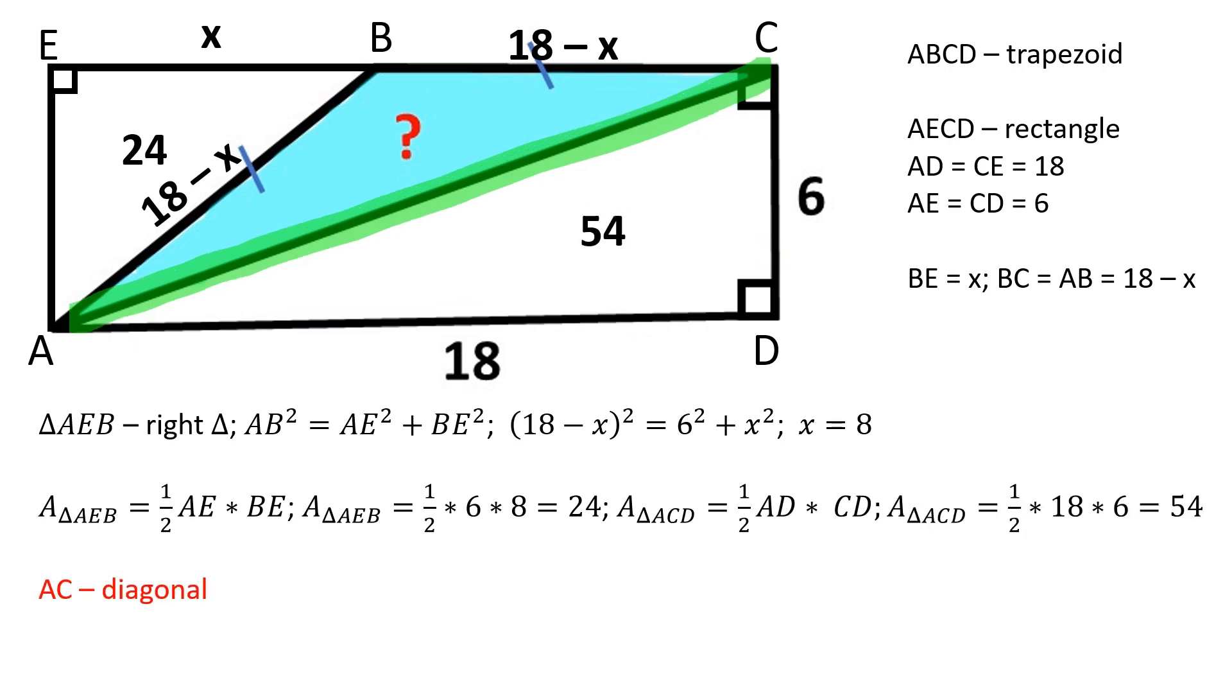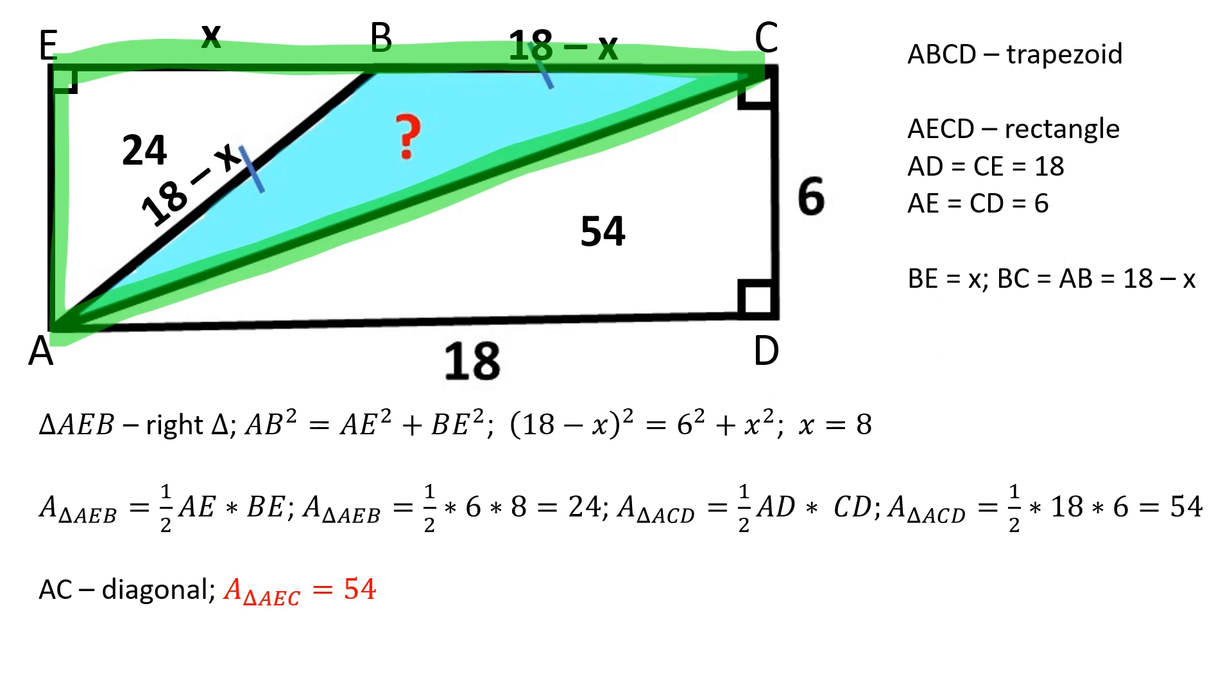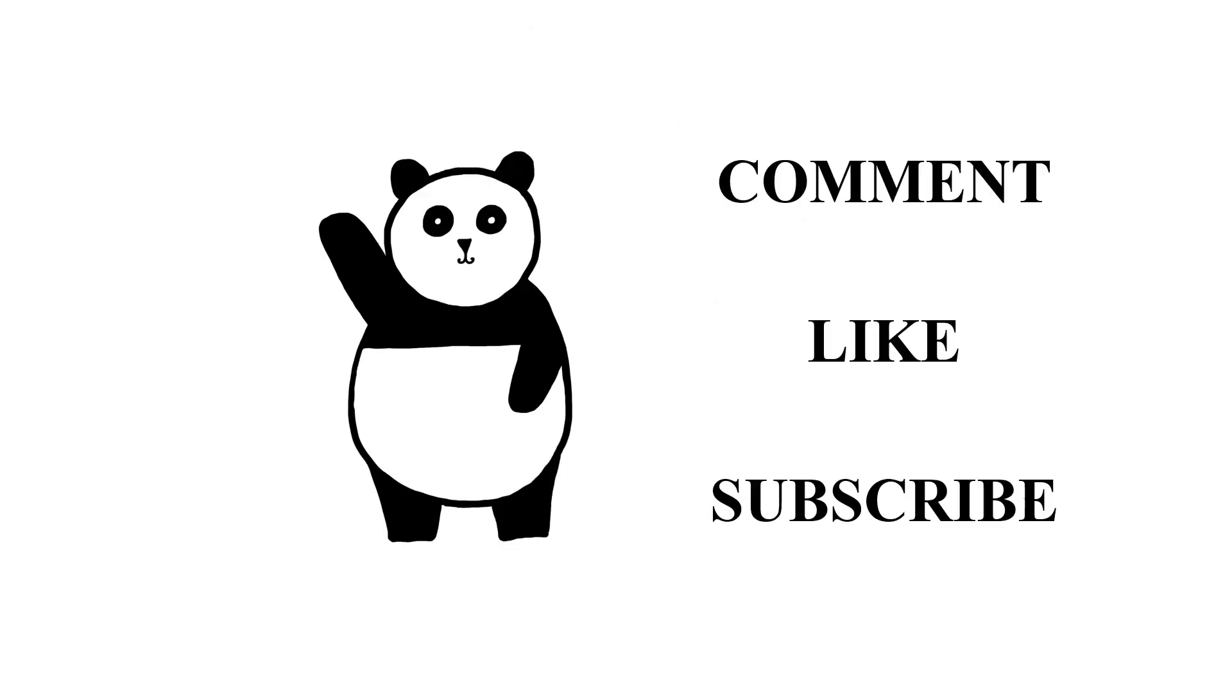AC is the diagonal of a rectangle, which divides the rectangle into two equal triangles. Therefore, the area of triangle AEC is equal to 54 square units. The area of triangle ABC is equal to 54 minus 24, which is 30 square units. Thank you for watching.